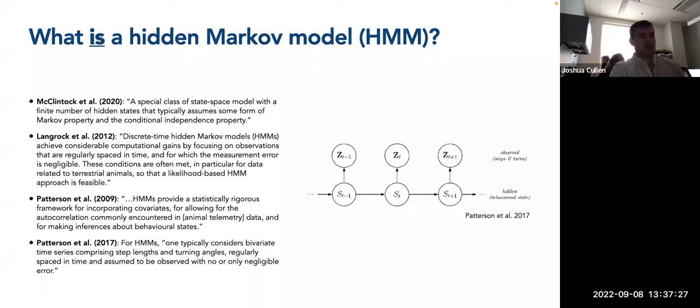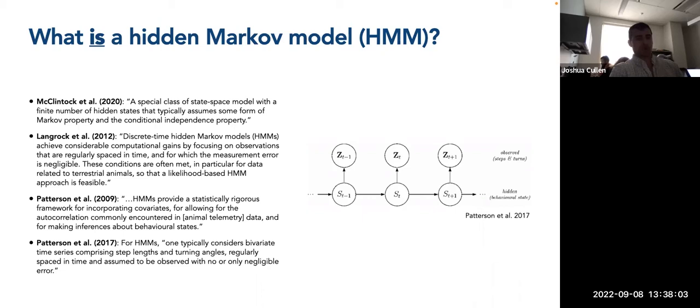If you wanted to include covariates as part of the estimation process in a single stage, you would need to do some custom coding — there's currently no R package that allows you to do so. Patterson and colleagues (2017) also define hidden Markov models as typically considering bivariate time series of step lengths and turning angles, regularly spaced in time and assumed to be observed with no or only negligible error. This is primarily why, until very recently, most people used hidden Markov models only for terrestrial animals.